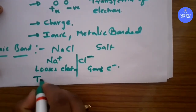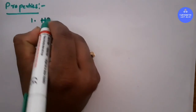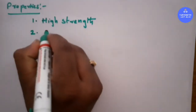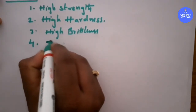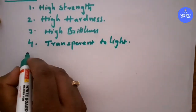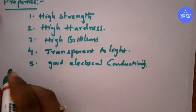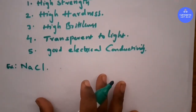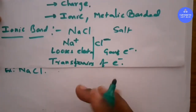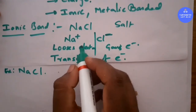This type of bond is called an ionic bond. Ionic bond is formed by transferring of electrons. Its properties include: high strength, high hardness, high brittleness, transparency to light, and good electrical conductivity. The main traditional example is sodium chloride.